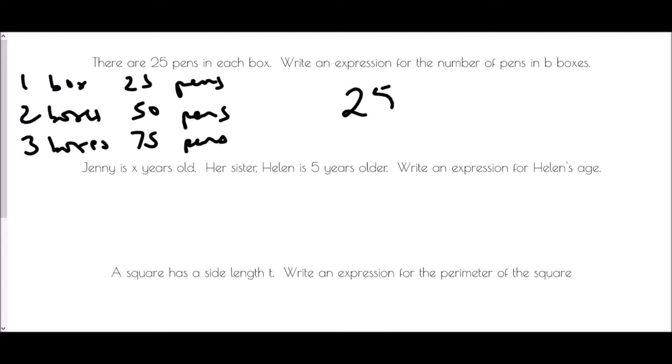25 times b — whenever we are dealing with algebra and we have a multiplication, we don't write the multiply sign, so we just call it 25b. No matter how many boxes we have, we'll be able to work out how many pens there are.